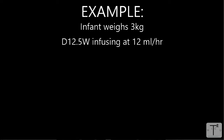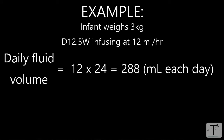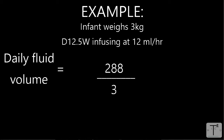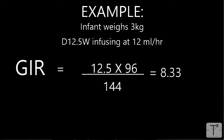Let's give another example. Let's say a 3 kilo baby is receiving D12.5 at a rate of 12 mLs an hour. To calculate the G.I.R., first calculate how much that baby is getting in a day: 12 mLs times 24 hours equals 288 milliliters each day. The baby weighs 3 kilos, so the baby is receiving 288 divided by 3, which equals 96 mLs per kilo per day. So the G.I.R. is 12.5 times 96 divided by 144, which equals 8.33.